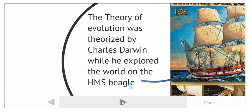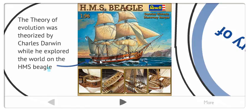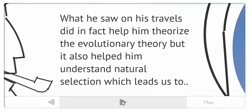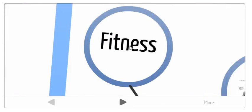The theory of evolution was theorized by Charles Darwin when he explored the world on the HMS Beagle, this lovely ship right here. And what he saw in his travels on the Beagle did in fact help him theorize the evolutionary theory, but it also helped him understand natural selection, which leads us to our first topic, fitness.